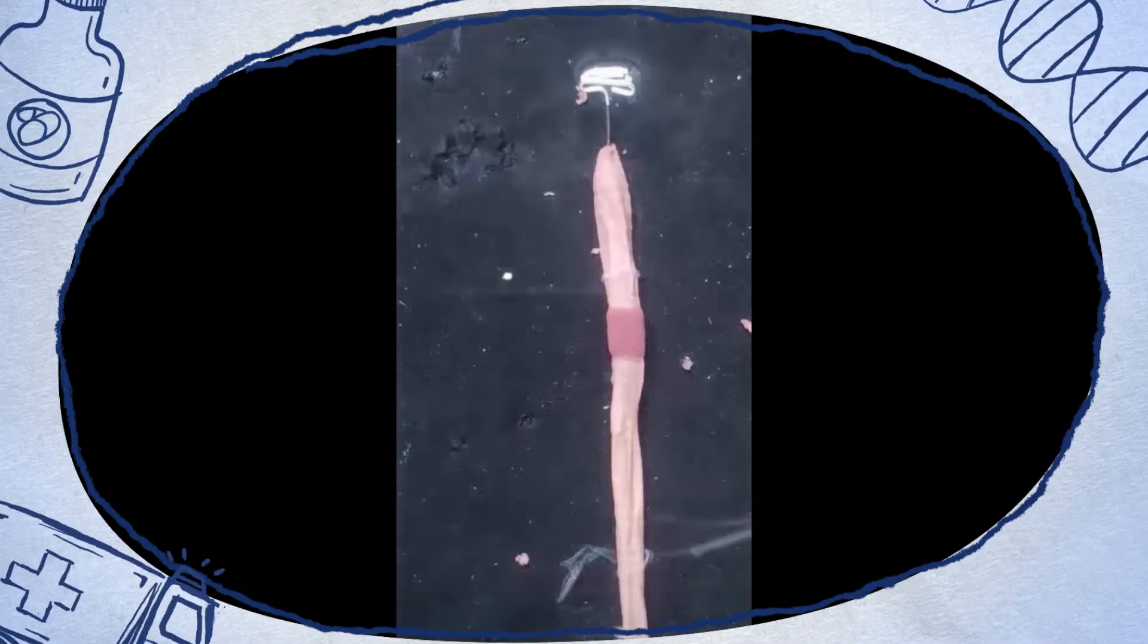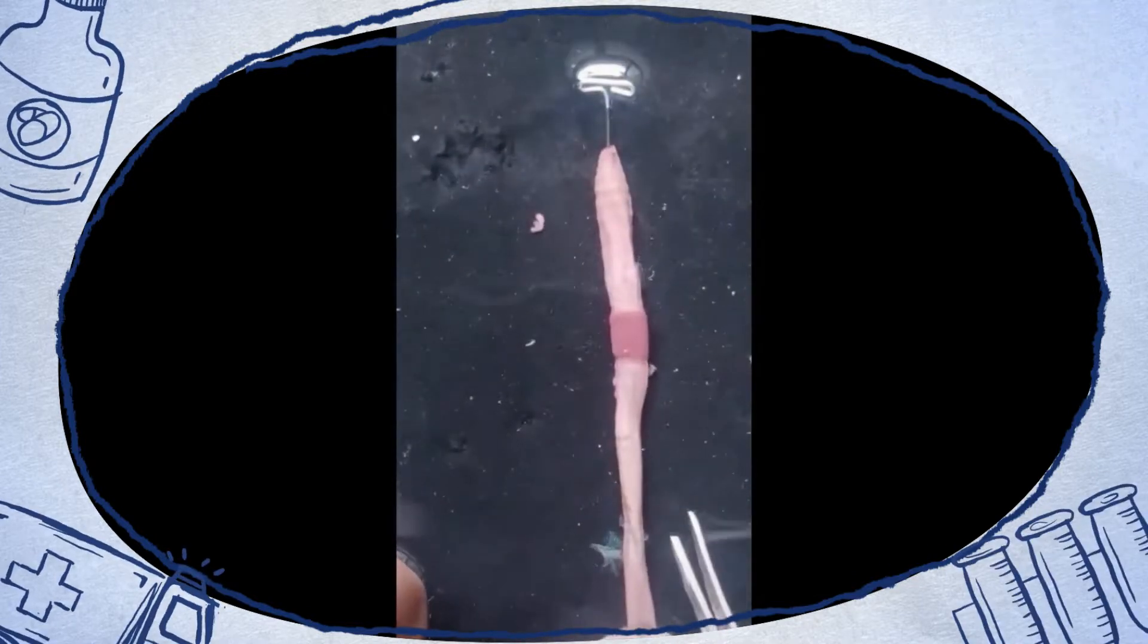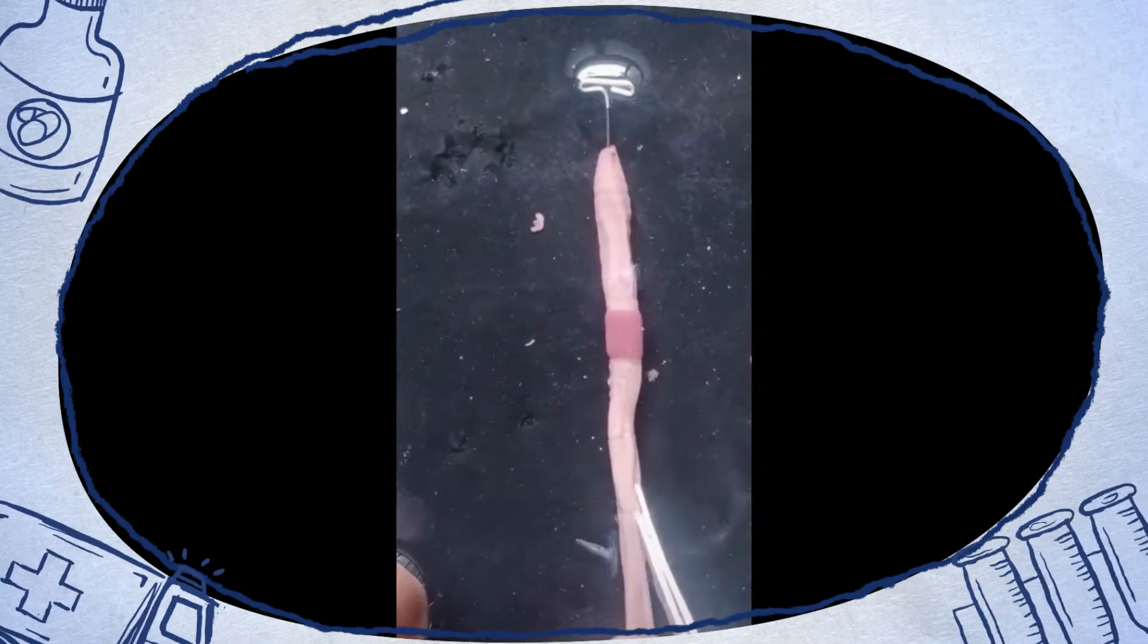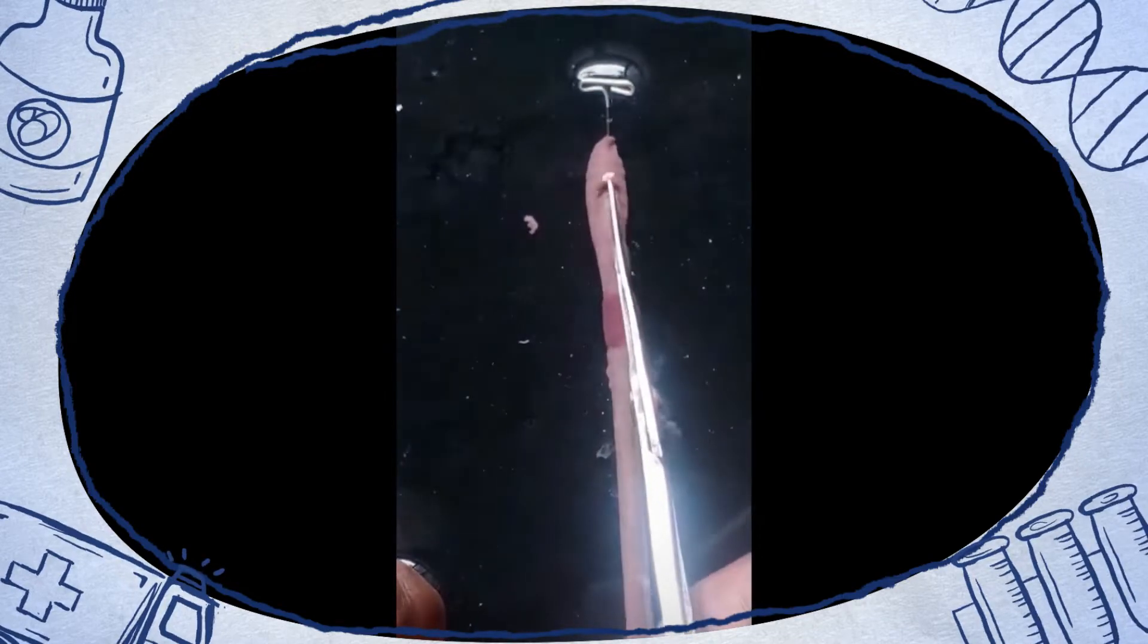To begin with, pin up the animal with its dorsal side up. To check for the dorsal side, look for the dorsal blood vessel. Then make a small incision on the dorsal side and cut open the animal.